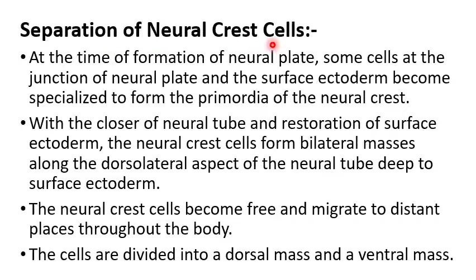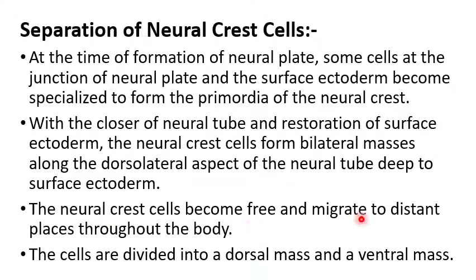Regarding separation of neural crest cells: at the time of formation of the neural plate, some cells at the junction of the neural plate with the surface ectoderm become specialized to form the primordia of the neural crest. With closure of the neural tube and restoration of the surface ectoderm, the neural crest cells form bilateral masses along the dorsolateral aspect of the neural tube. These neural crest cells become free and migrate to distant places throughout the body. They are divided into a dorsal mass and a ventral mass.